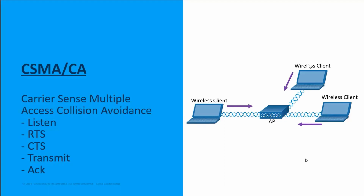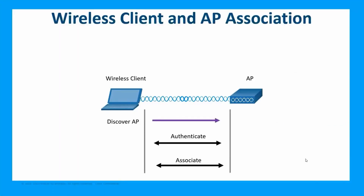The end device — your computer, laptop, or tablet — sends an RTS, a ready-to-send message, heard by the access point. The access point then provides dedicated access and responds with a CTS, a clear-to-send, indicating dedicated access is ready. When the wireless end device hears the CTS, it transmits its data. All wireless transmissions are acknowledged, and if the end device does not receive an acknowledgement, it knows there was a collision and restarts the entire process from the listening step.